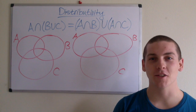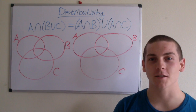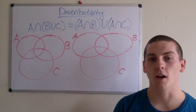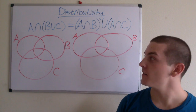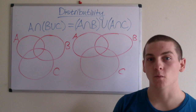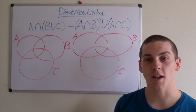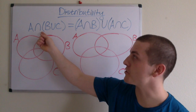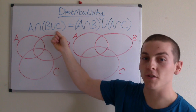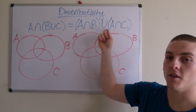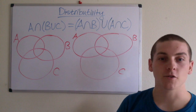In this video, I'll be introducing another algebraic law of sets: the distributive law. The distributive law simply states that a set operation will be distributed over another set operation. For instance, A intersection (B union C) equals (A intersection B) union (A intersection C).